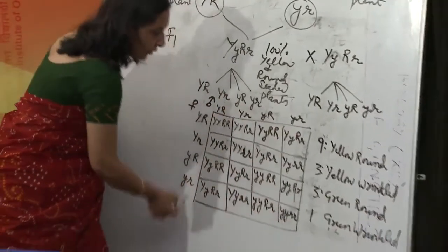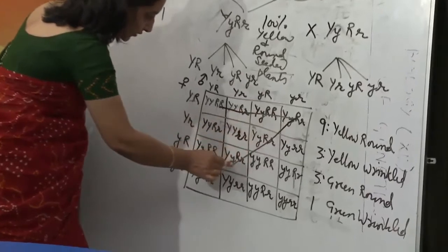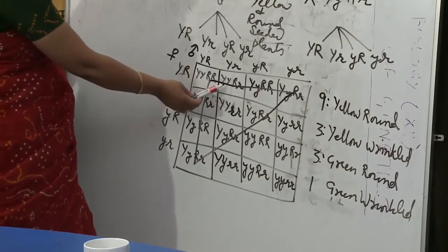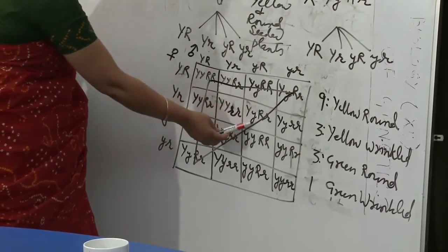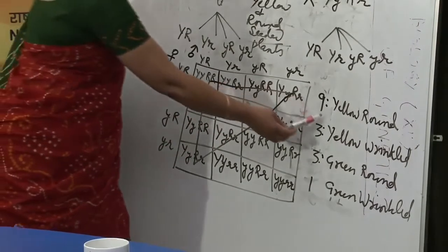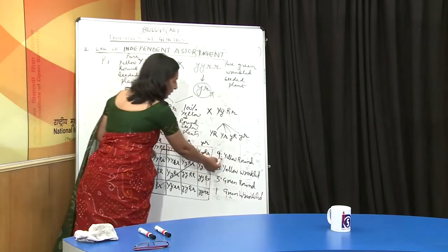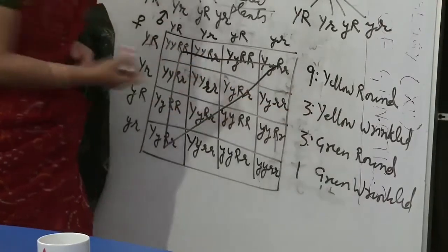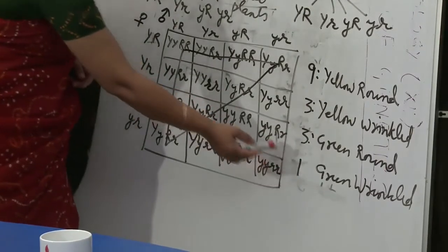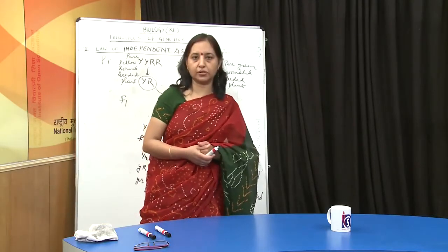If you make the Punnett square and follow the same types of gametes, the plants in the dominant category will all be yellow round. We can verify: yellow round, yellow round, yellow round, yellow round, yellow round, yellow round, yellow round, yellow round, and yellow round. As a result, the ratio will be 9:3:3:1 — yellow round is 9, yellow wrinkled is 3, green round is 3, and green wrinkled is 1. So in a dihybrid cross in the second generation, the ratio is 9:3:3:1.